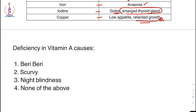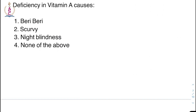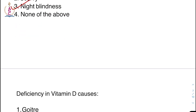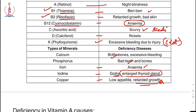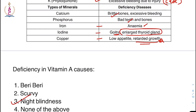Practice questions: deficiency of vitamin A causes — as discussed — night blindness. Deficiency of vitamin D — it is rickets, which is weakening of bones.